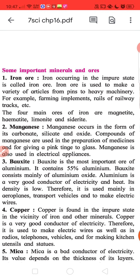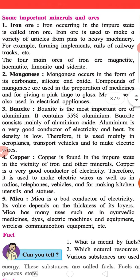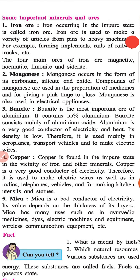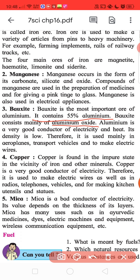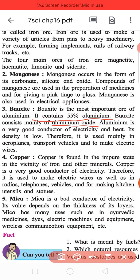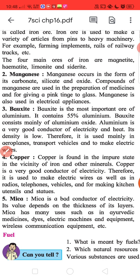Manganese is also used in electrical appliances. Bauxite is the most important ore of aluminium. It contains 55% aluminium and consists mainly of aluminium oxide. Aluminium is a very good conductor of electricity and heat. Its density is low, therefore it is used to make aeroplanes, transport vehicles and electrical wires.